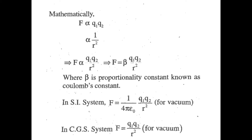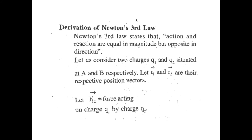In the SI system, F = (1/4πε₀)·(q1·q2)/r², where 1/4πε₀ is the value of β. In the CGS system, the value of 1/4πε₀ becomes 1, so F = q1·q2/r² for vacuum.